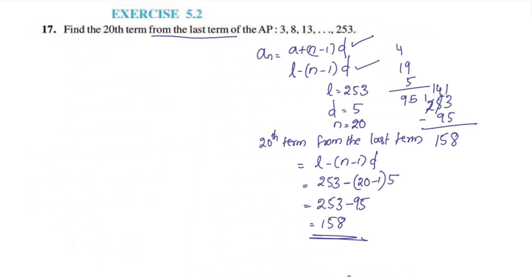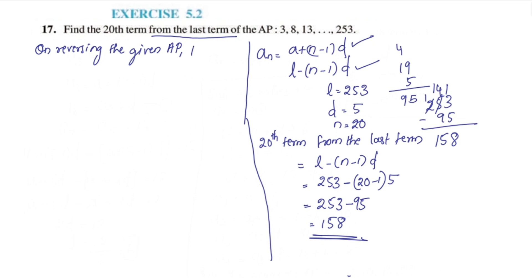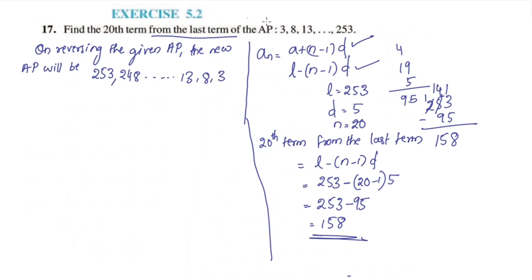Now we will also solve this by reversing the AP. We reverse the sequence so that the first term becomes 253. The preceding terms going back are 253, 248, and so on, then 13, 8, 3. This is the reversed sequence.